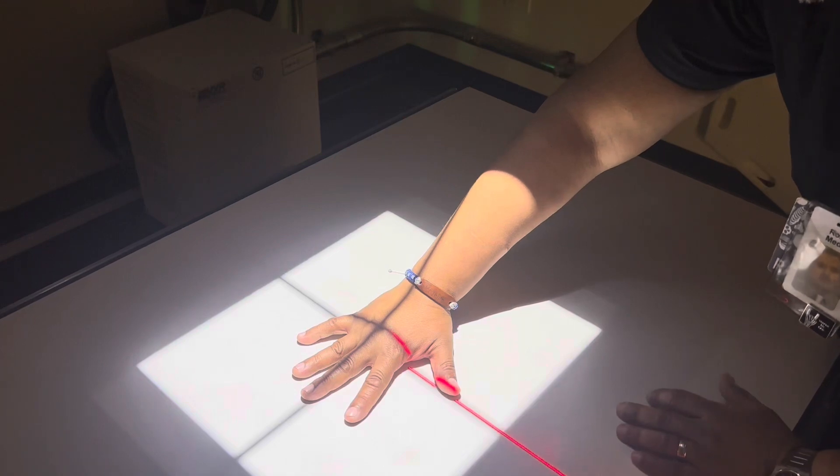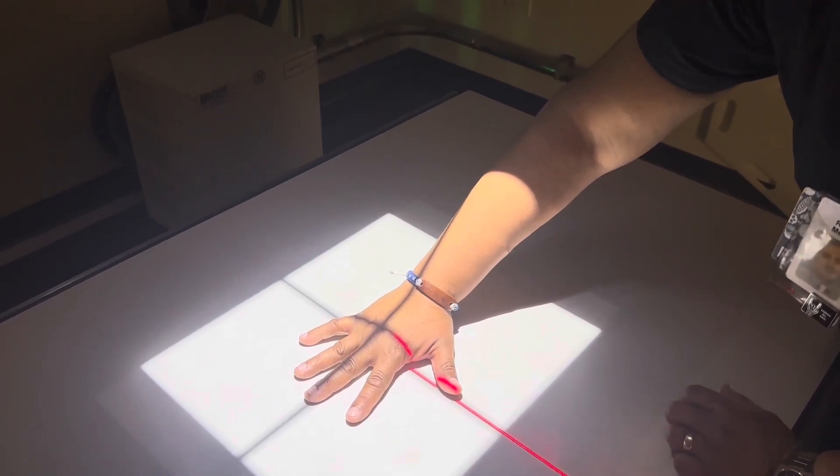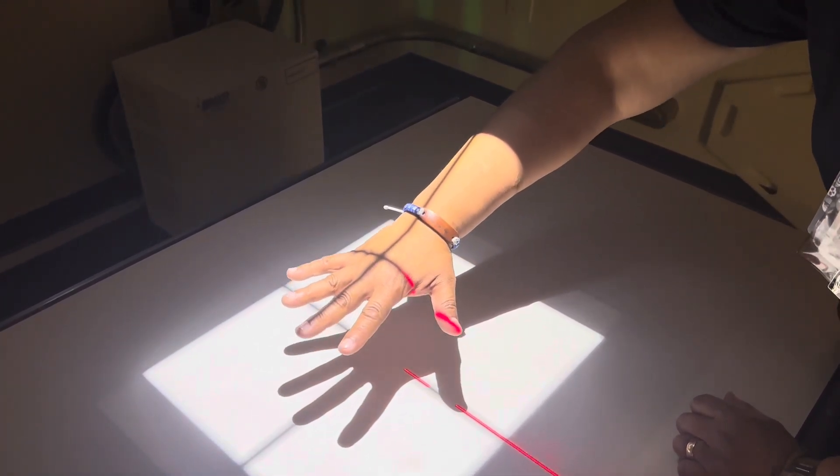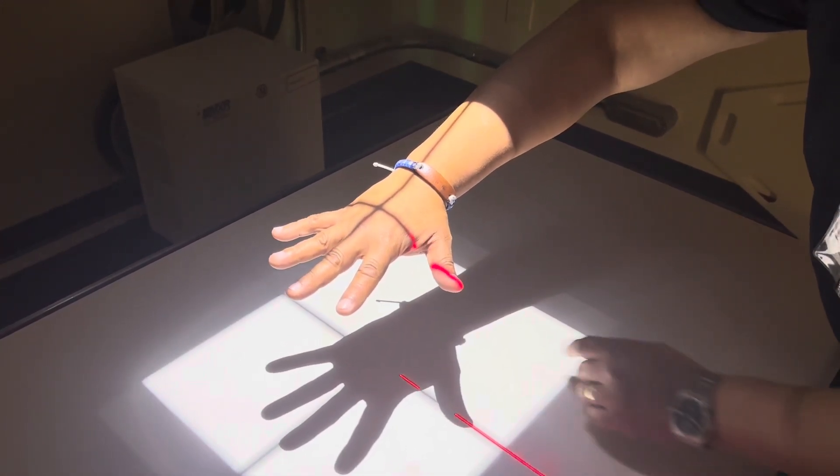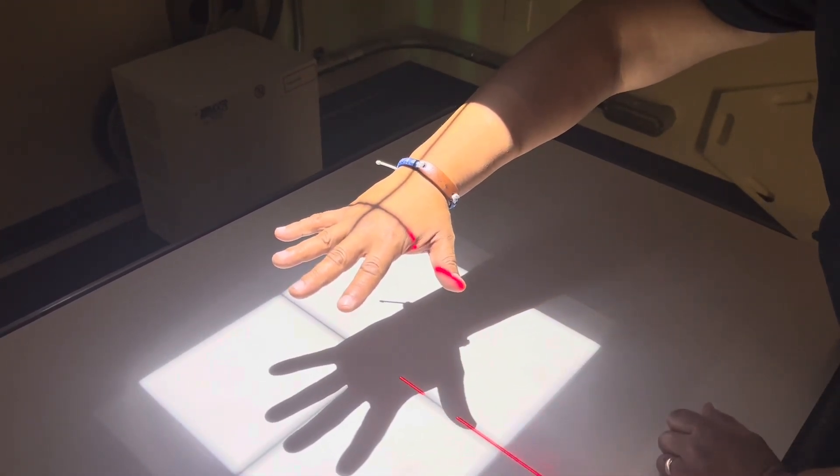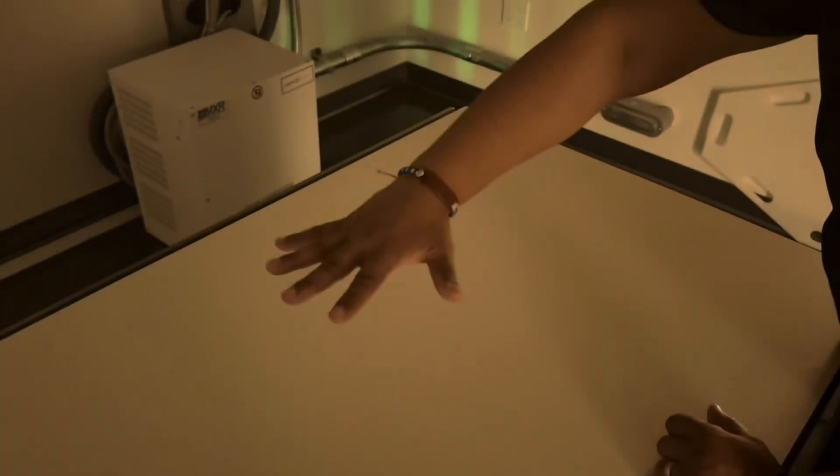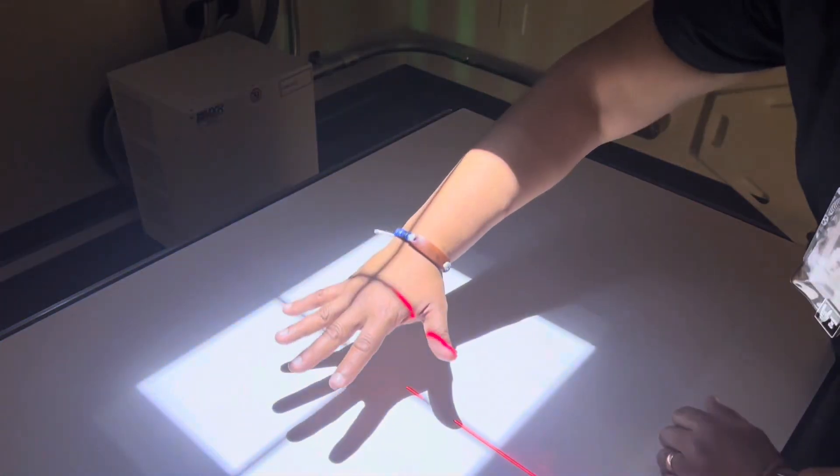But again, when you have less shadow it's going to increase the sharpness of the structural edges. So you want to decrease your OID. If you increase your OID, look how big the shadow is getting. So you would think that that's better but actually the edges are going to get a little bit blurry. So we want to make sure that we get a chance to minimize the OID.